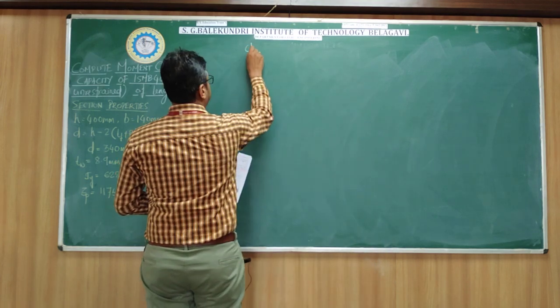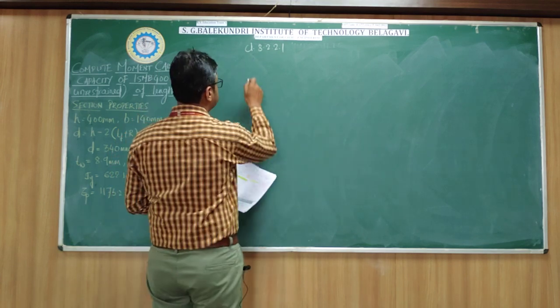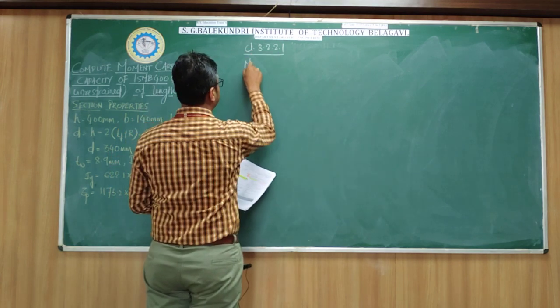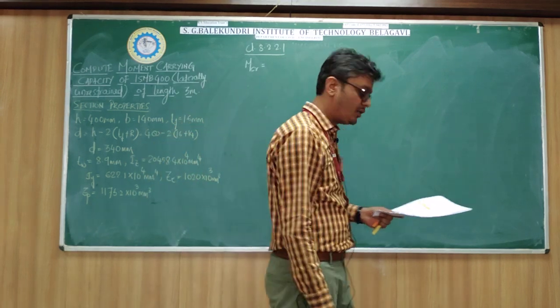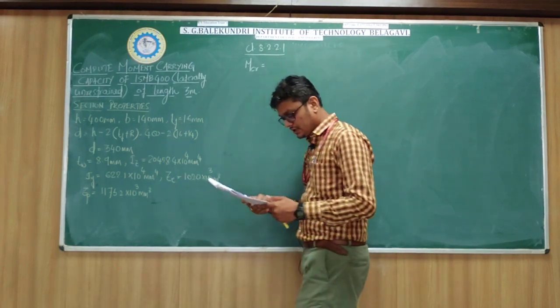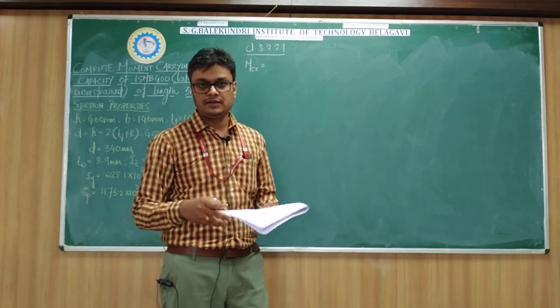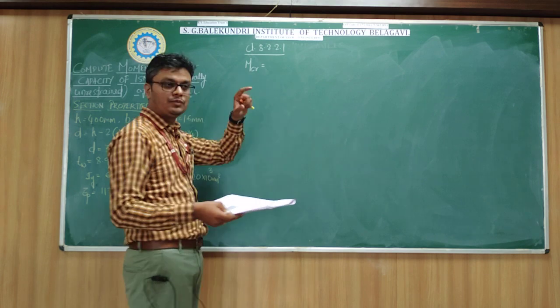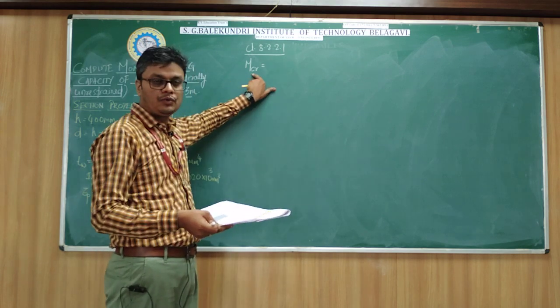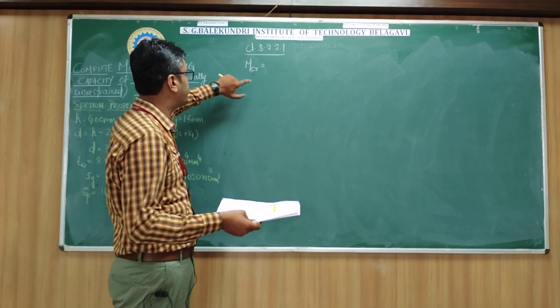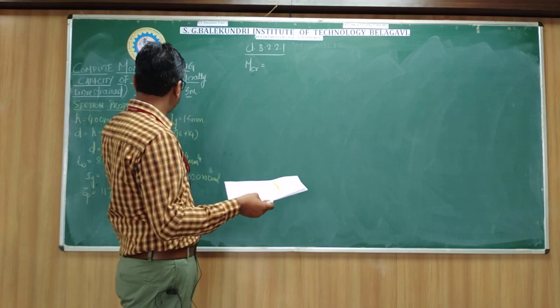If you go to clause 8.2.2.1 of IS800-2007, which will give you the formula for elastic critical moment, which will be very useful for us to find out the moment carrying capacity of a laterally unrestrained beam. To find the moment carrying capacity of a laterally unrestrained beam, we should first find out the elastic critical moment.